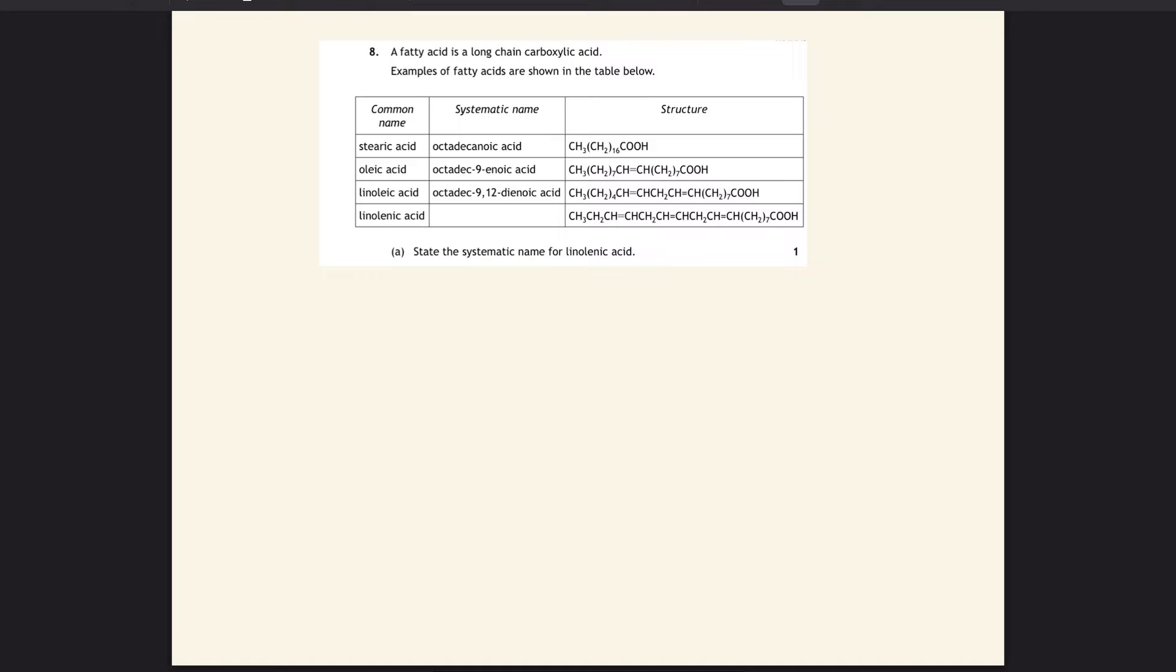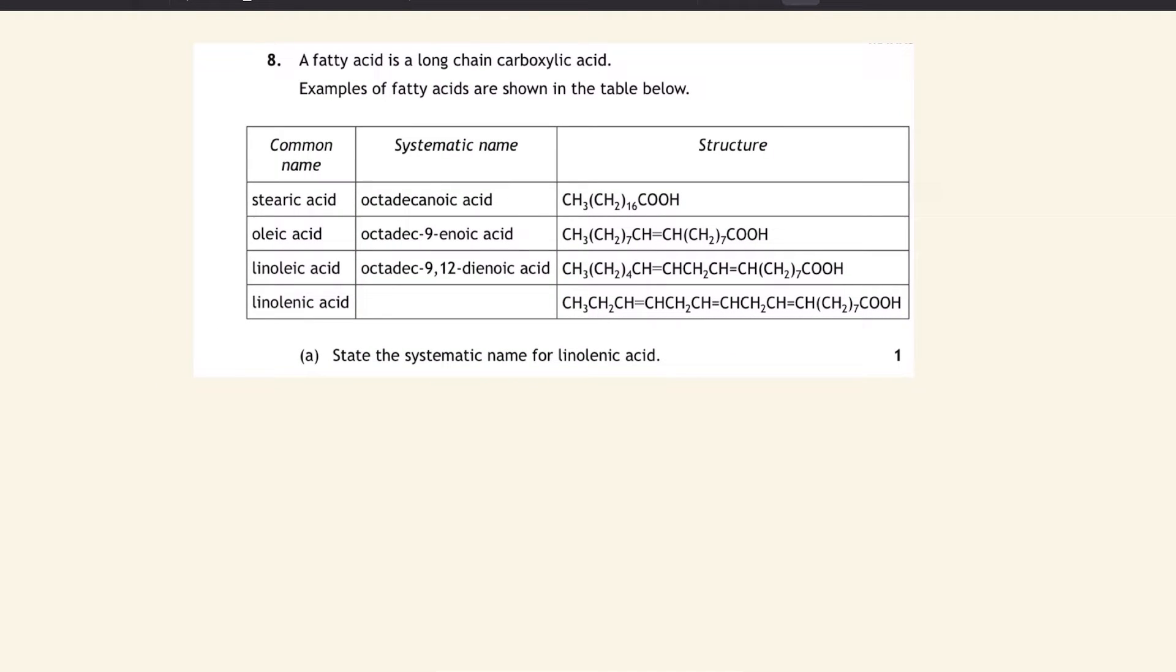The first type is naming a fancy molecule. This particular question gives you examples of fatty acids with their common name, systematic name, and structure. It wants you to come up with the systematic name for linoleic acid, filling out this missing gap in the table. Because all of them end in oic acid, this one probably will too.